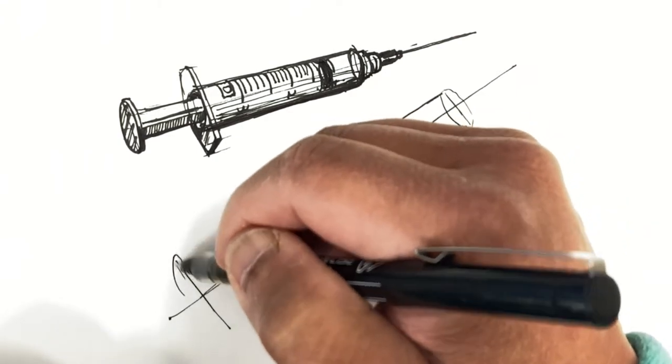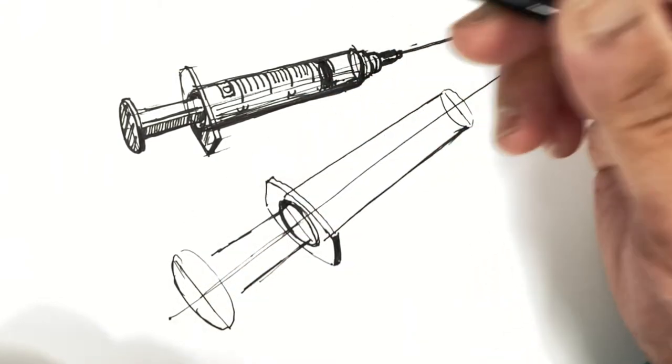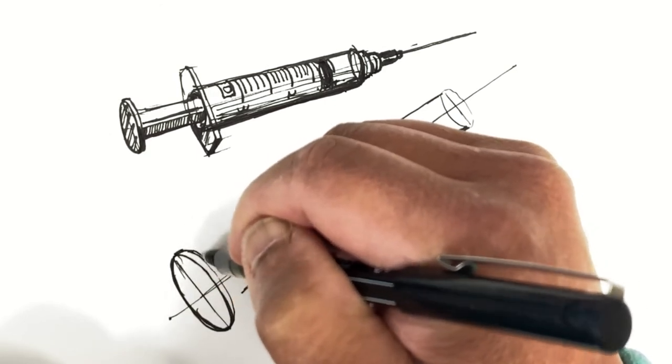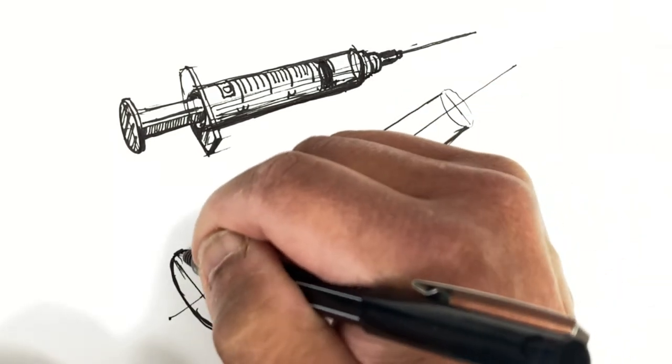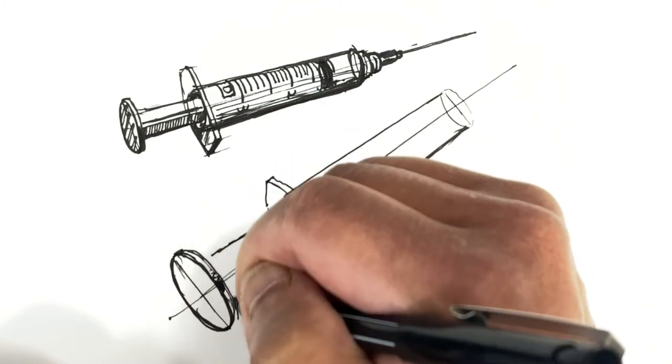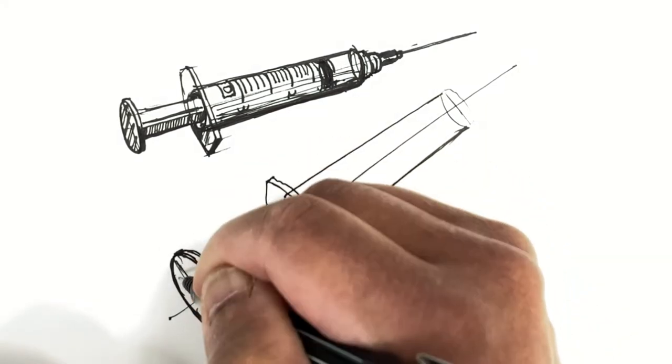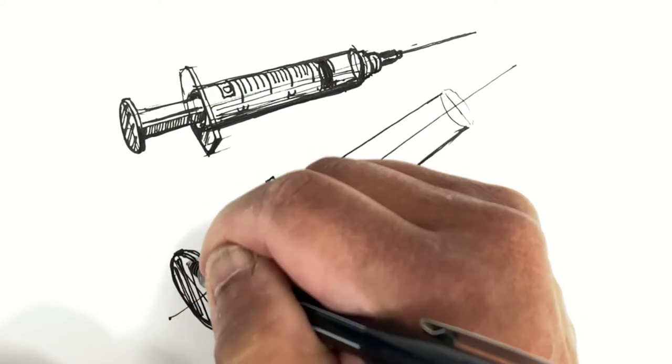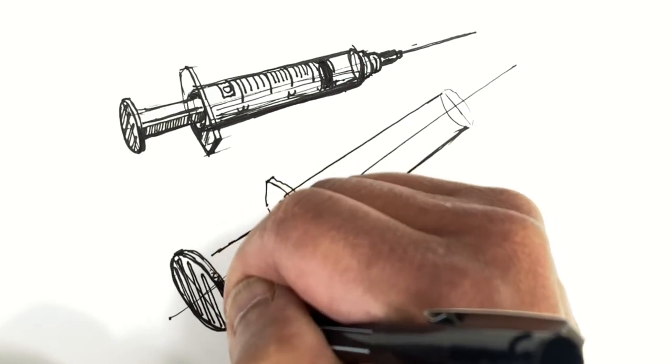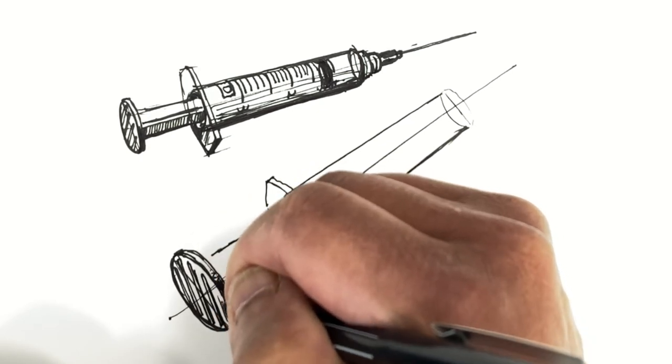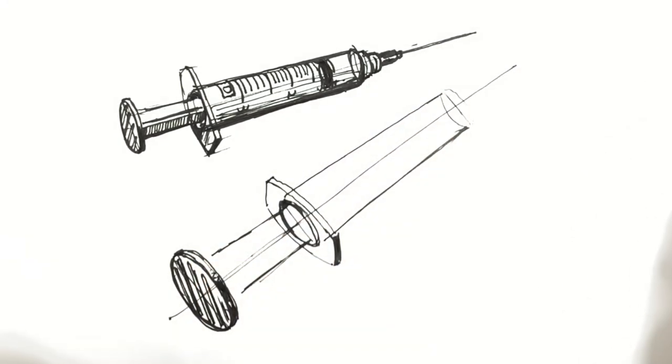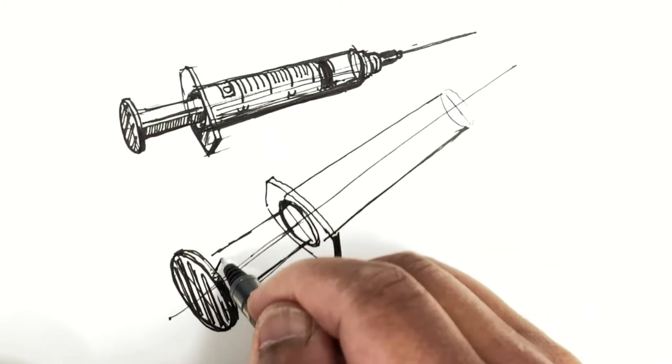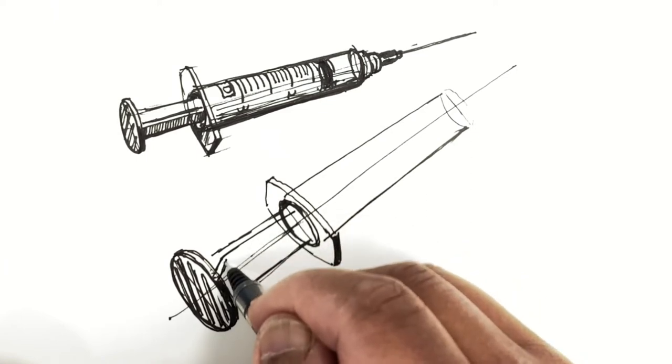I'll start drawing in the plunger part, still following the rules of perspective where the parallel lines basically get closer together further into the distance. This is really good practice for drawing ellipses and cylinders. Always keep in mind that the long axis of the oval will be perpendicular to the long axis of the barrel or cylinder. Here I'm drawing the ridges on the plunger flange.